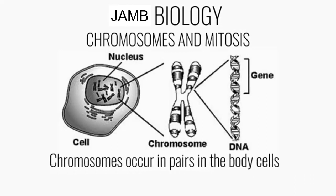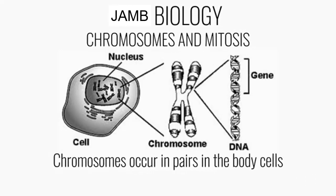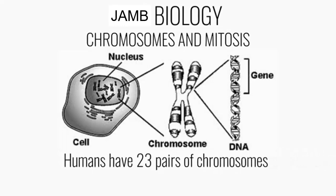These chromosomes occur in pairs in the body cells, and humans have 23 pairs of these chromosomes. For each pair of chromosomes, an organism derives a copy from the mother and a copy from the father.